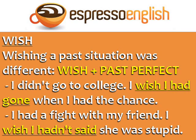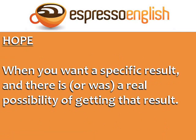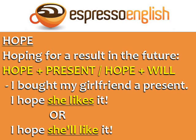Both of these situations are in the past, and we are wishing they were different. The word hope is used when you want a specific result, and there is or was a real possibility of getting that result. If you're hoping for a result in the future, use hope plus the present tense, or hope plus will.